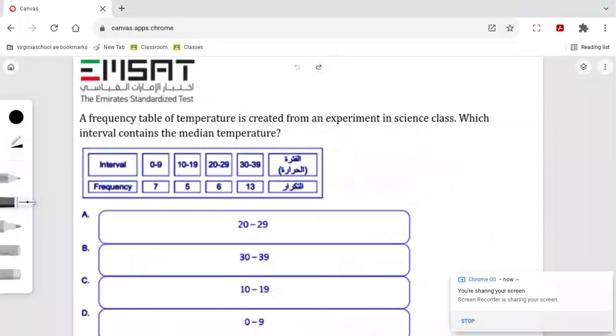A frequency table of temperature is created from an experiment in science class. Which interval contains the median temperature? We have the interval and the frequency. According to the table, we can say that the temperature range of 0 to 9 is repeated seven times.